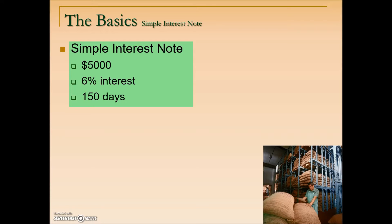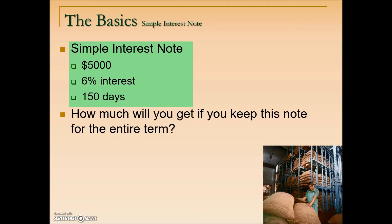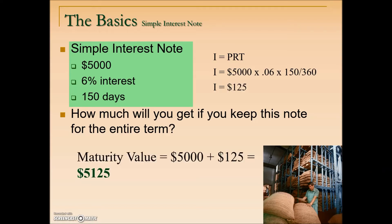Here we have a simple interest note with a value of $5,000, 6% interest for 150 days. What is the maturity value? We calculate the interest by taking principal times rate times time. We have interest of $125, so when this note matures the holder of the note will receive $5,125.